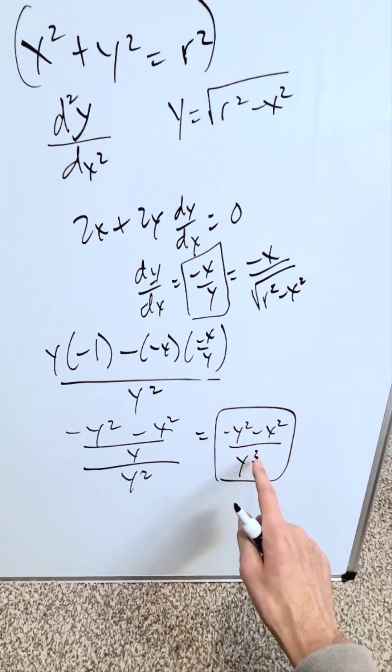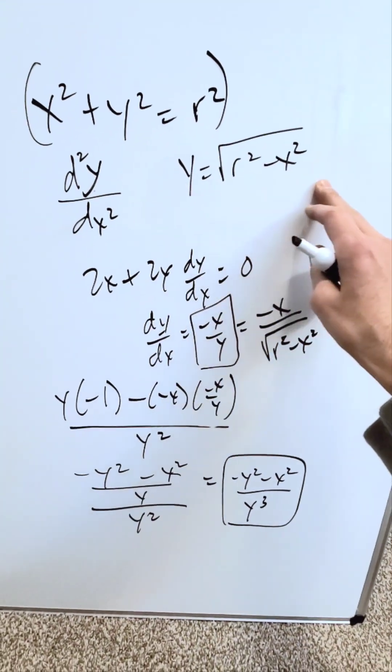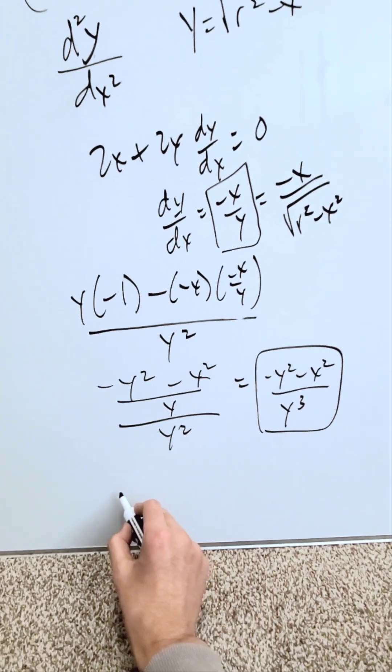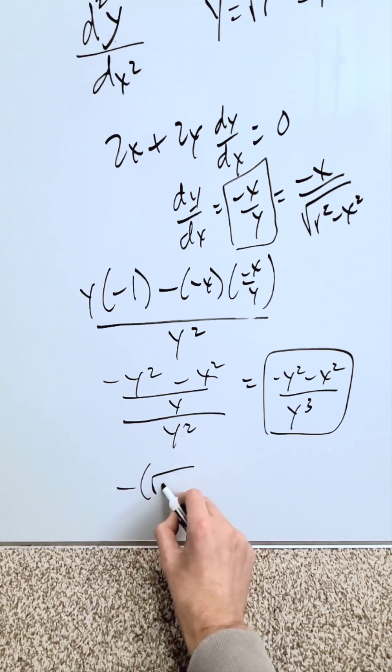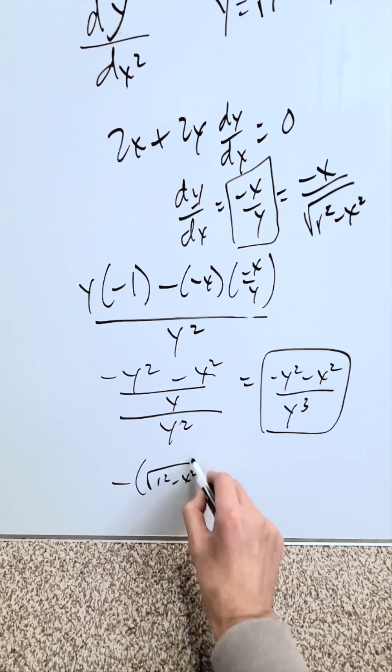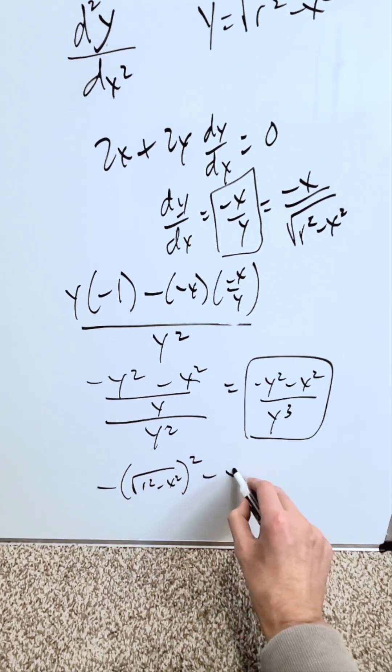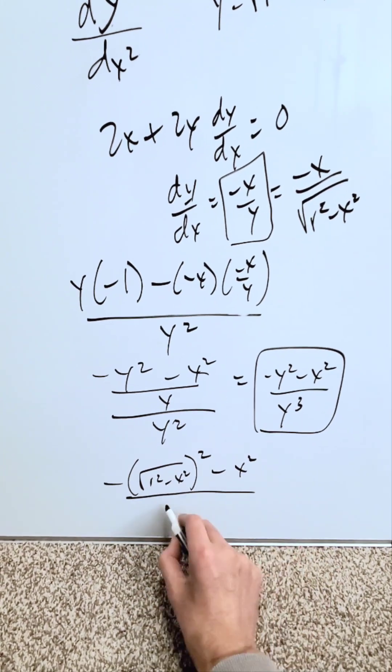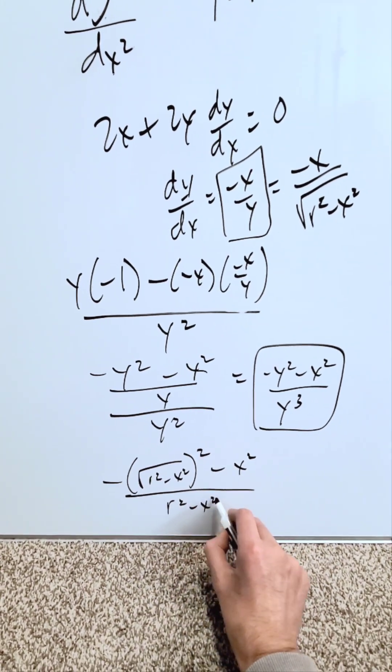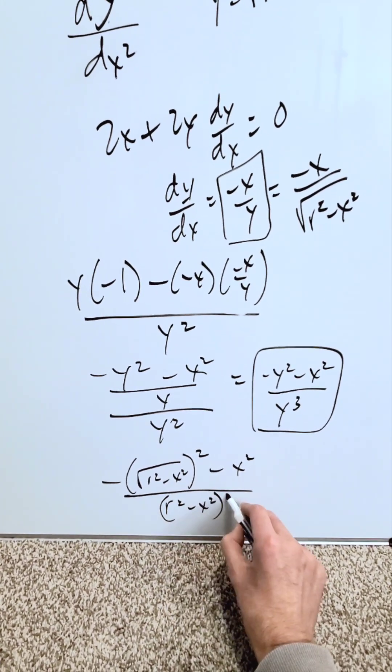Now all you have to do is resubstitute your y item which is this. You'll have minus your y which is the square root of r squared minus x squared to the power of 2, minus x squared, divided by r squared minus x squared root to the power of 3, which I'll write as 3 over 2.